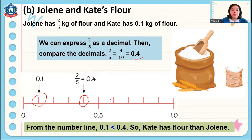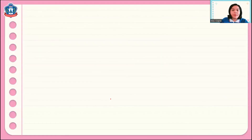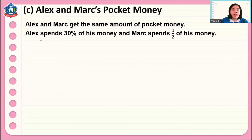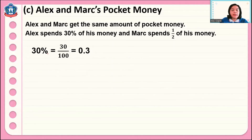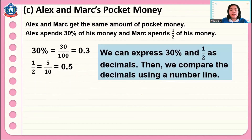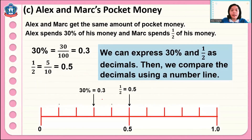Another problem: Alex and Mark get the same amount of pocket money. Alex spends 30 percent of his money and Mark spends one half of his money. 30 percent is equal to 30 out of 100, so that is 0.3. One half is equal to 0.5. We can express both 30 percent and one half as decimals and then compare them on a number line. We can see that 30 percent is less than one half, because 30 percent is only 0.3 and one half is 0.5.